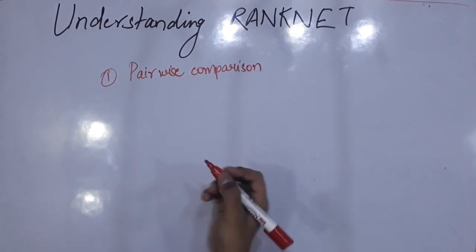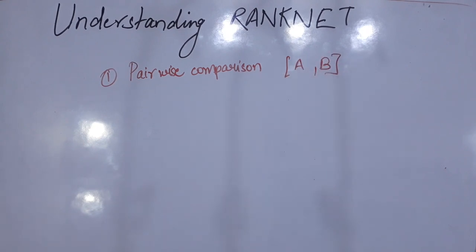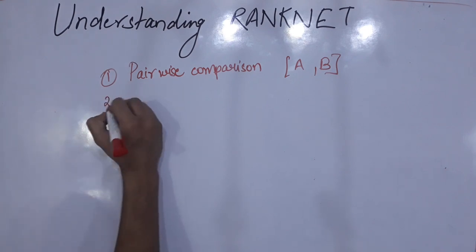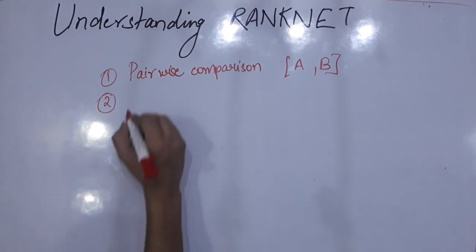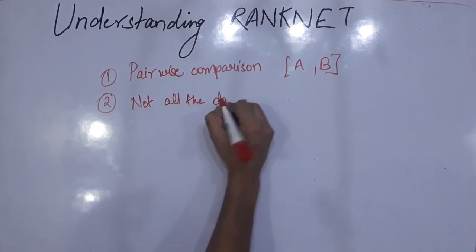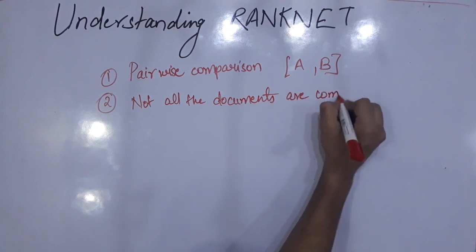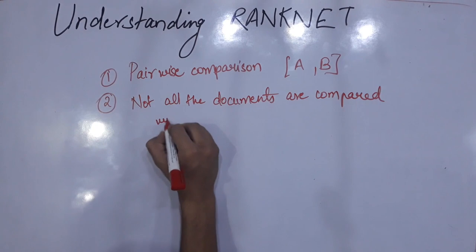First point: comparison is made between two documents A and B. By document I mean an article, a particular result of the query, or a particular feature vector, on the basis of which pairwise comparison will be made. Second point: not all the documents are compared with one another.